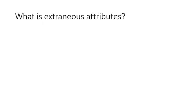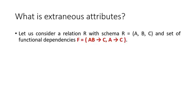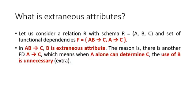First of all, we will try to understand the extraneous attribute. Let us consider relation R with schema having attributes A, B, C and the set of functional dependencies: AB determines C and A determines C. In the given functional dependency AB determines C, we can say that B is an extraneous attribute. Why? Because there is another functional dependency A determines C, which means that A alone can determine C, so the use of B is unnecessary — that is, extra.